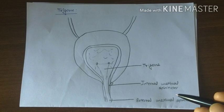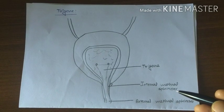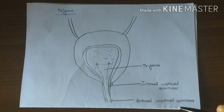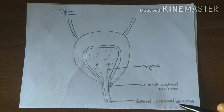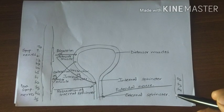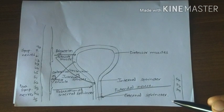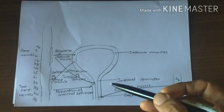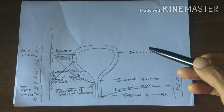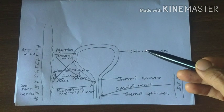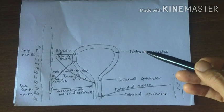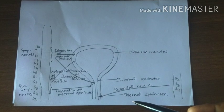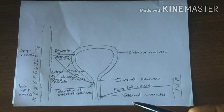The internal urethral sphincter is made up of circular smooth muscle and is involuntary. The external urethral sphincter is made up of skeletal muscle and is voluntary. The internal urethral sphincter and detrusor muscles are supplied by autonomic nerves — sympathetic and parasympathetic — whereas the external urethral sphincter is supplied by the pudendal nerve, which is somatic.